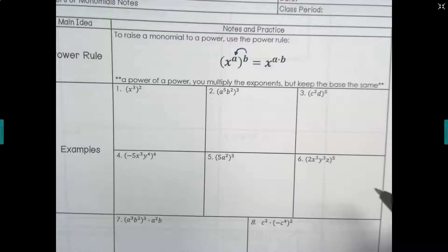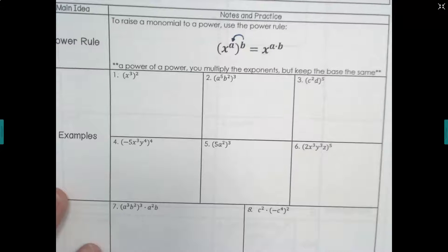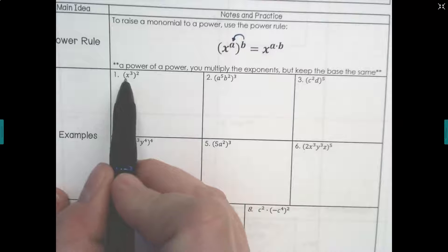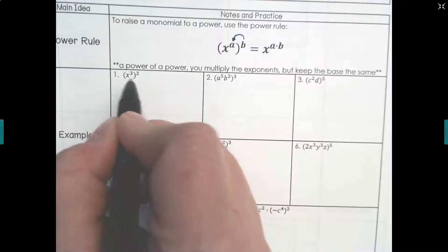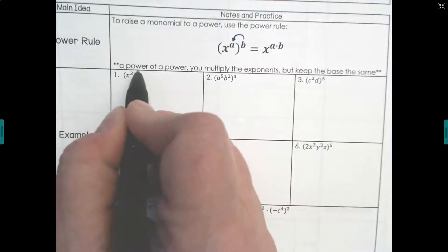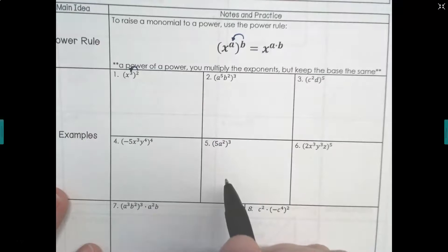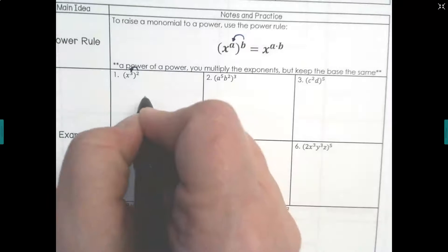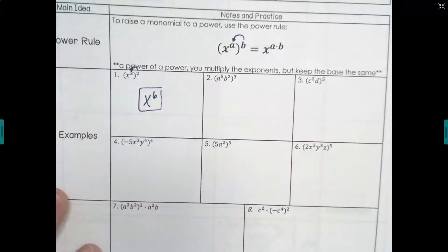Let's try a few of these to get a feel for how the power rule works. We have an exponent raised to an exponent: x to the third, and then that's going to be squared. What you end up doing is multiplying those two exponents, so you get x to the sixth.